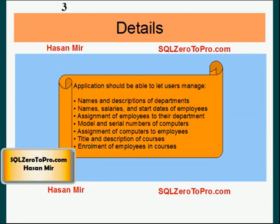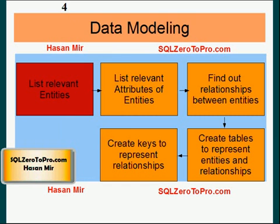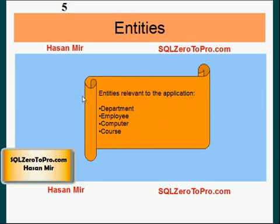So basically, in all these lines on the screen, we have about four things of importance. The first step of data modeling is to list relevant entities, and we would list these: entities relevant to the application are department, employee, computer, and course. So we have four entities in the system — that's our first step. In the next tutorial, I'll show you the subsequent steps of data modeling. I'll see you in the next tutorial.